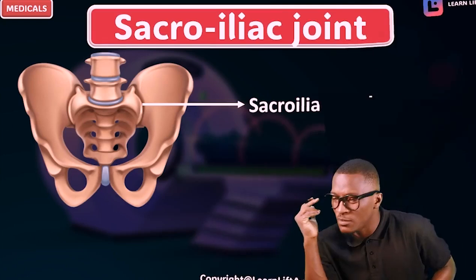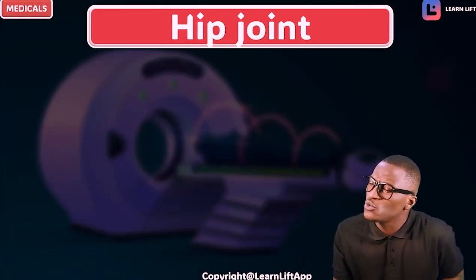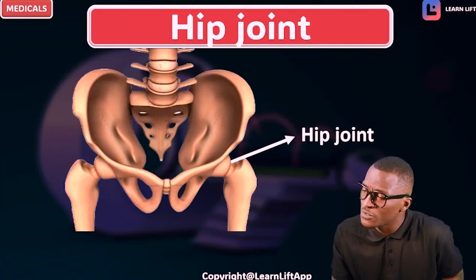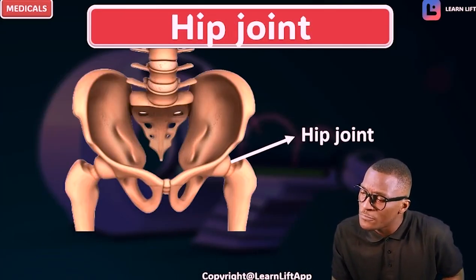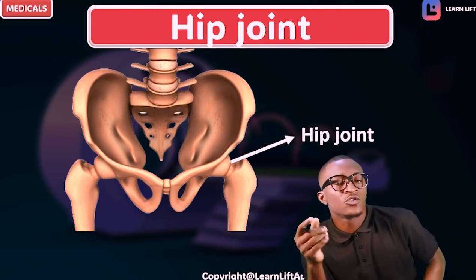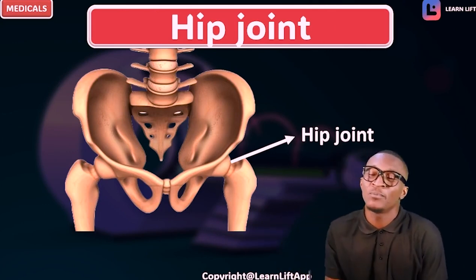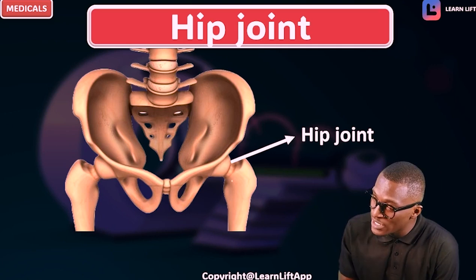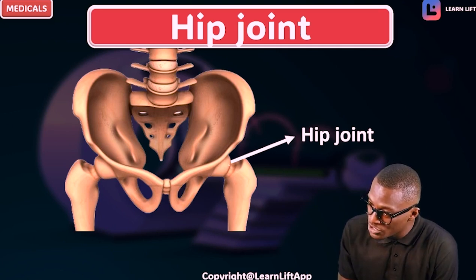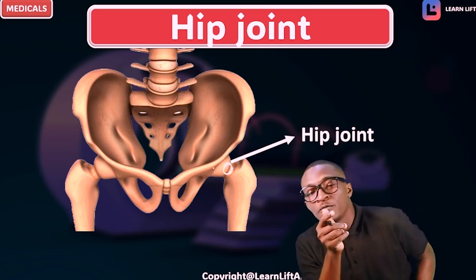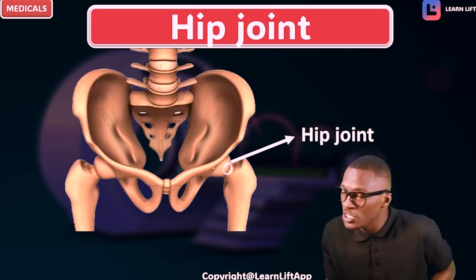The next joint we're going to talk about is what we call the hip joint. It is from where the head of the femur fits into the acetabulum. The commonest point of fracture is the neck of the femur — which is this region. This is the joint.